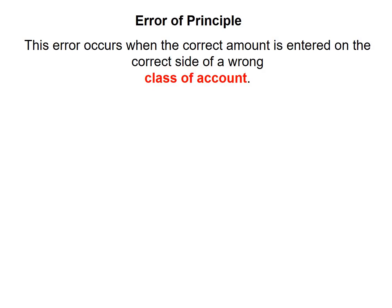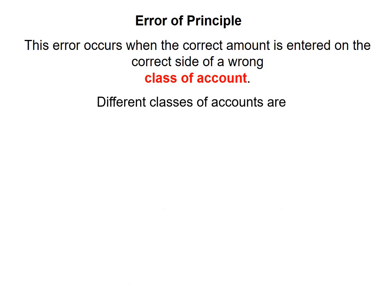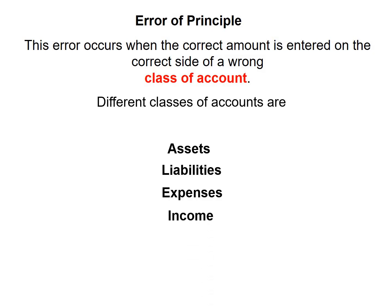The next error we will look at is the error of principle. This occurs when the correct amount is entered on the correct side of the wrong class of account. The different classes of accounts are assets, liabilities, expenses, and income.